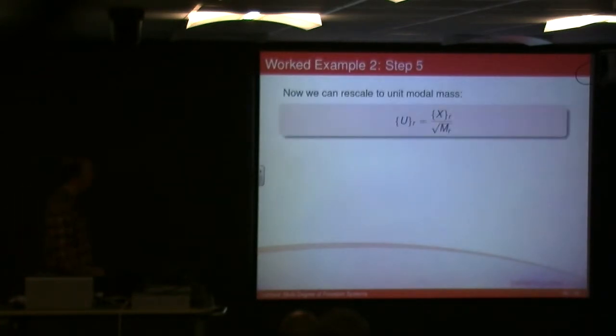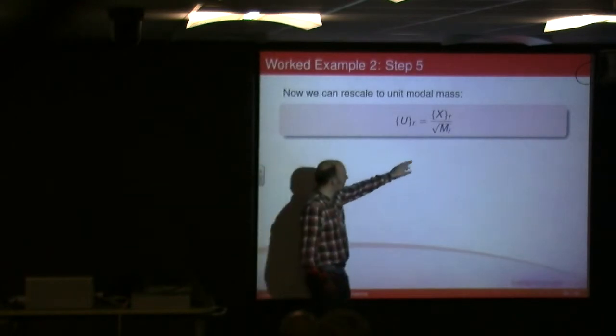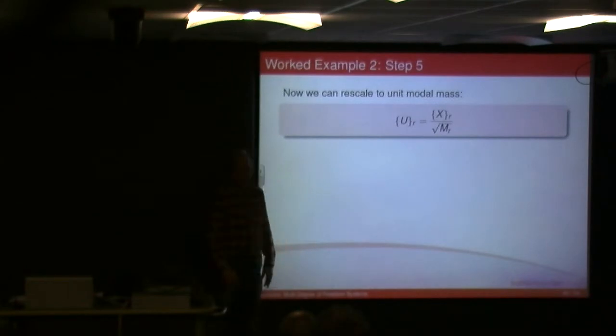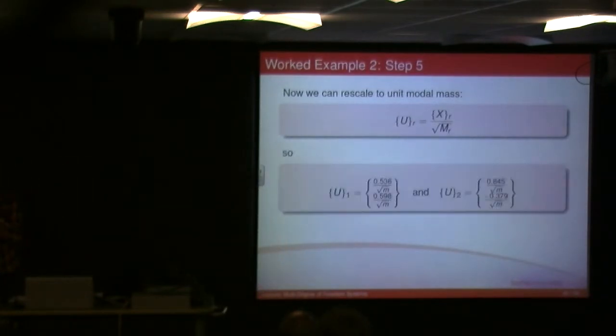Rescale the modal mass. So I take the value I found for m1 and m2, I square root it and divide the mode shape by that value to get my u1 and u2 and so on, which will give me my modal thing. So if I go through it, obviously that m term isn't the value, so that's left is square root of m down here.